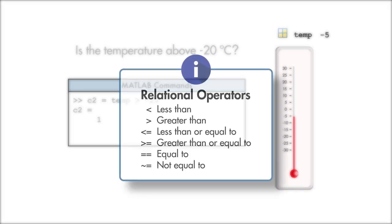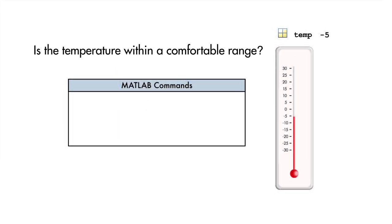So far, we've used the relational operators less than and greater than, but there are other relational operators to help us compare values. Now, although we checked two separate conditions, we still need to write a single expression to determine if the current temperature is within the comfortable range for our friend.